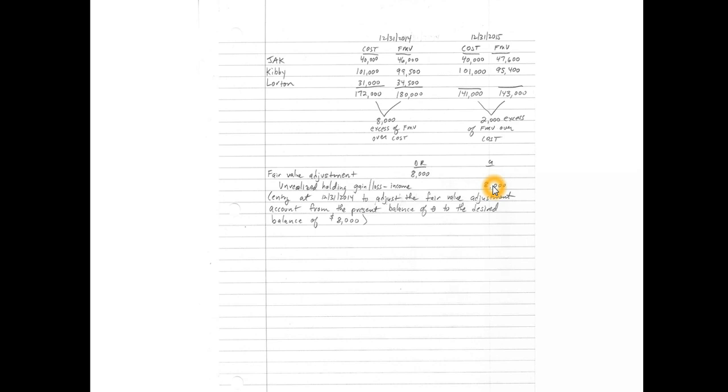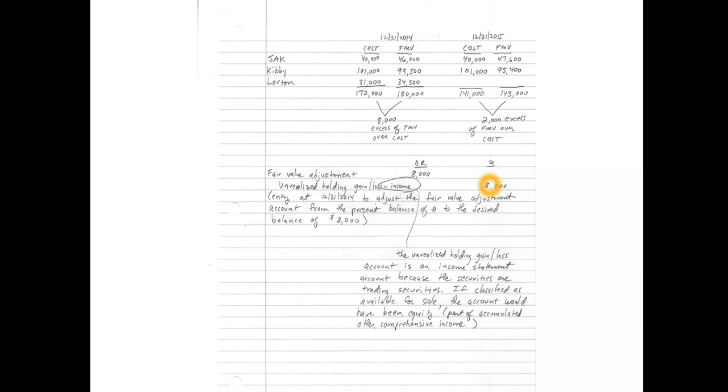That entry brings the fair value adjustment account balance up to $8,000. Because these securities are classified as trading securities, the unrealized holding gain or loss account is an income statement account. The $8,000 gain — reflecting the increase in value of the securities during the year — runs through the company's 2014 income statement as a separate line item: unrealized holding gain or loss on trading securities.